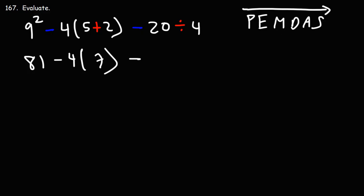Here we have minus. Now, we don't want to subtract 2 and 20. Division has more priority over subtraction. We want to divide 20 by 4 first. 20 divided by 4 is 5.